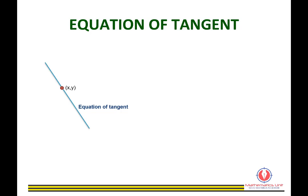For the Equation of Tangent, we use the straight line formula: y minus y1 equals m times (x minus x1). We substitute the x and y values into x1 and y1 in the formula. For the gradient, we differentiate the curve equation — dy/dx equals the gradient of the tangent.